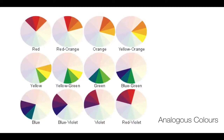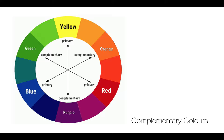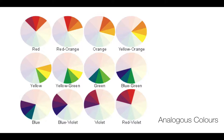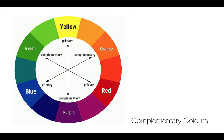Some combinations of colors work well together, and some can be really jarring to the eye — like musical notes, some go well together while others sound harsh. Analogous colors work well together: any three continuous colors on the color wheel. You can also talk about complementary colors — a primary color like red and the color diagonally opposite in the color wheel, green, will work together. Similarly, blue and orange, or purple and yellow, will work together.